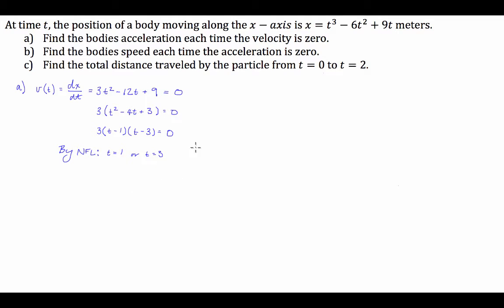Now that we have the t values where velocity equals 0, we need to substitute them into an equation that gives us the body's acceleration. We don't have that yet, so we find the acceleration formula by differentiating the velocity equation, giving us a(t) = 6t - 12.